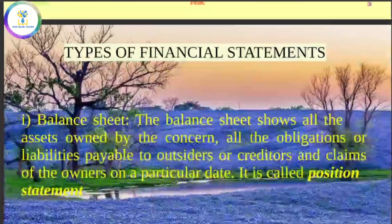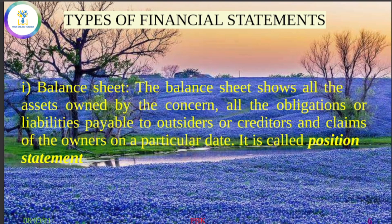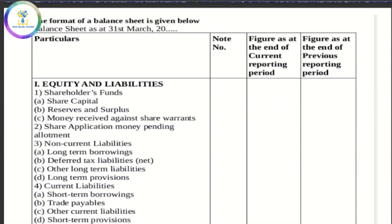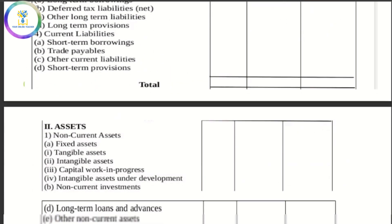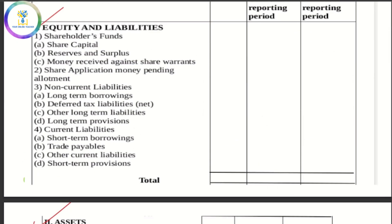Now we are going to focus on the types of financial statements, starting with the balance sheet. The liabilities side is classified into two: shareholders' fund — which includes share capital and surplus — share application money pending allotment, non-current liabilities including long-term borrowings, deferred tax liability, and other long-term provisions.